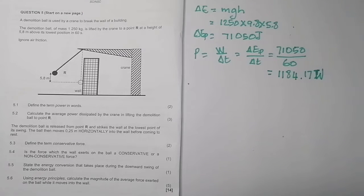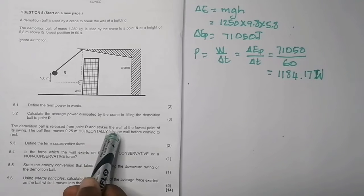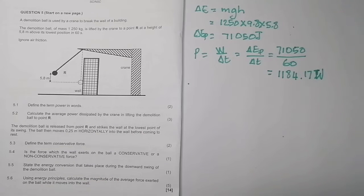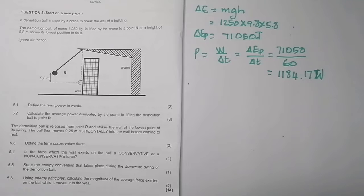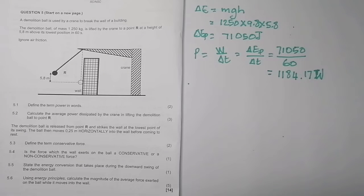The demolition ball is released from point R and strikes the wall at the lowest point of its swing, then moves 0.25 meters horizontally into the wall before coming to rest. Define the term conservative force: these are forces whose work done does not depend on the path taken. The force exerted by the wall on the ball is non-conservative.